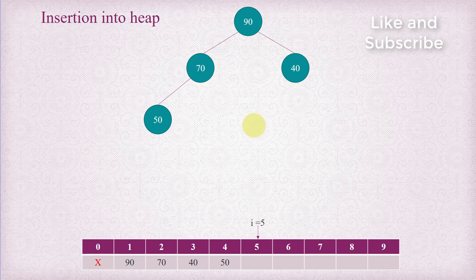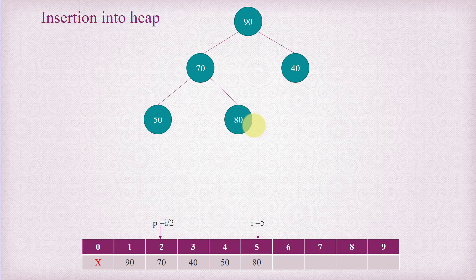The next element for insertion is 80, which is the right child of 70, at index 5. The parent of index 5 is index 2, since 5 divided by 2 is 2. We compare 70 with 80 — 80 is larger, so we move 70 to index 5 to make provision for 80. Then i goes to index 2 and p goes to i divided by 2. We compare 90 with 80: 90 is greater than 80, so we just place 80 at index i equals 2. The heap is adjusted.